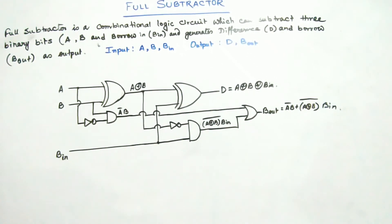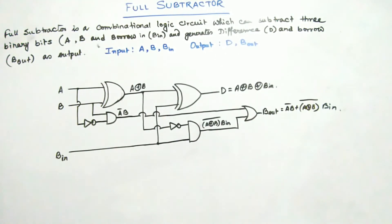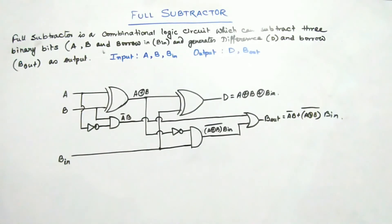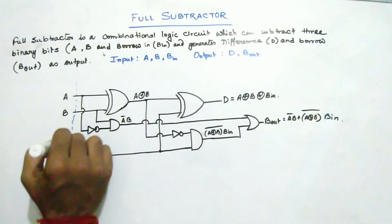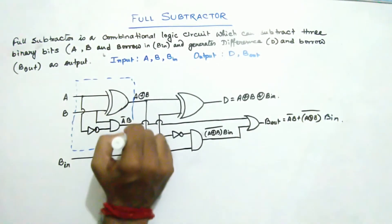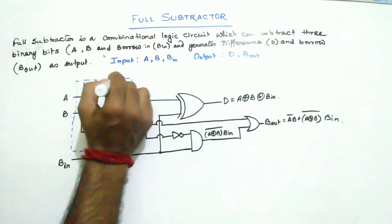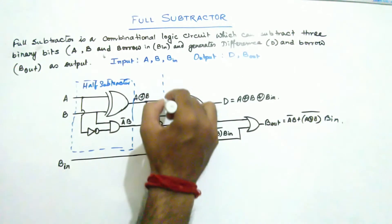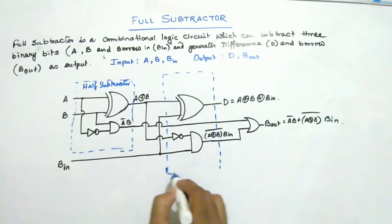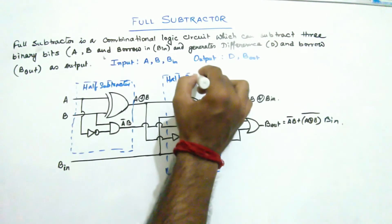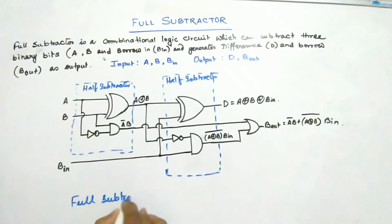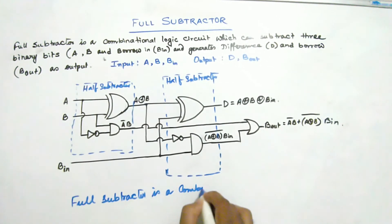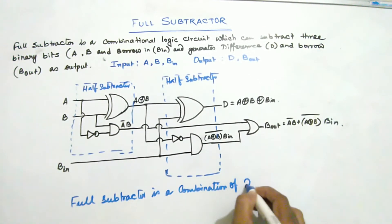Looking carefully at this logic circuit, we can compare it with a half-subtractor. A half-subtractor uses one XOR gate, one AND gate, and one NOT gate. We can see that this part of the full subtractor circuit works similarly to a half-subtractor, and so does the second part with another XOR gate, NOT gate, and AND gate. Therefore, a full subtractor is essentially a combination of two half-subtractors.